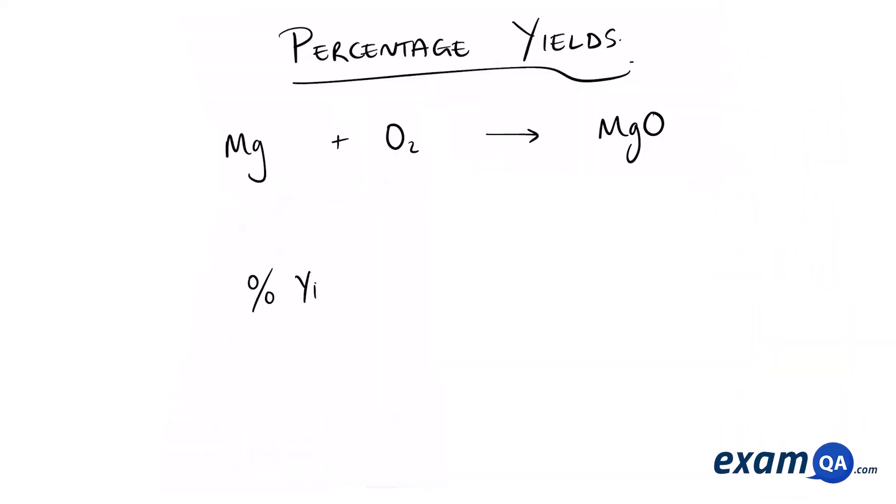To calculate a percentage yield, you're going to do actual mass divided by theoretical mass times 100. The theoretical mass comes from your calculations, whereas the actual mass comes from the reaction that you carry out in real life. Another word for actual mass is experimental mass, or the mass that you obtain by doing the experiment.